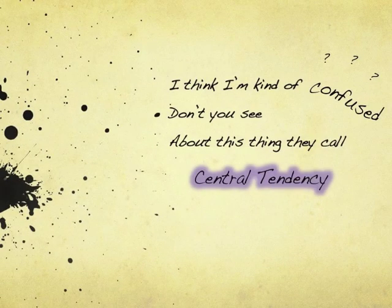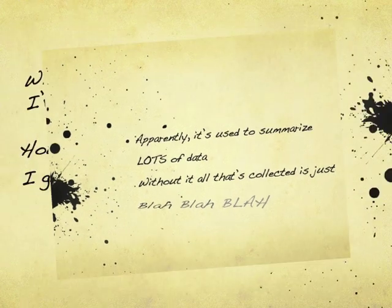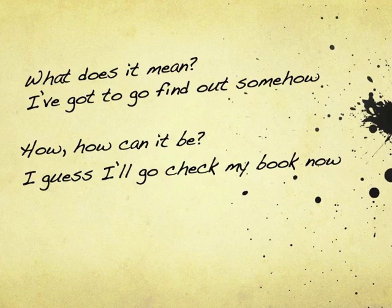I think I'm kind of confused. Don't you see about this thing they call central tendency? Apparently it's used to summarize lots of data. Without it, all that's collected is just blah blah blah — what does it mean? I've got to go find out somehow, how can it be? I guess I'll go check my book now.